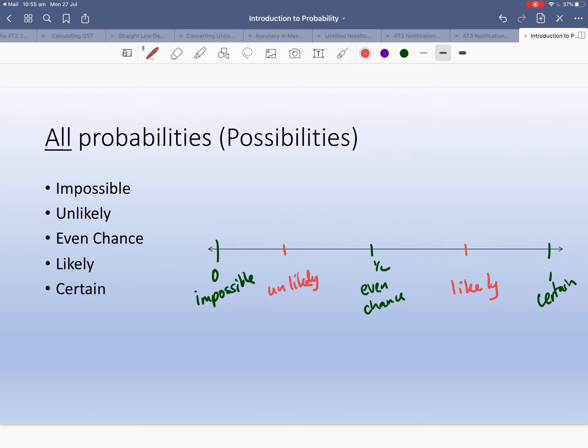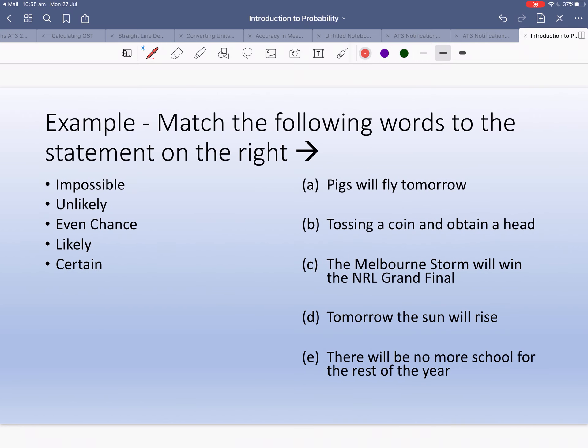So we have this scale and we use these words. It is likely that I will do really well in my maths test, or it's unlikely that I'll do really well in my maths test, or there's an even chance. It wouldn't be impossible and it wouldn't be certain. Can you write this down? Make sure you draw an arrow and put them where you see them.